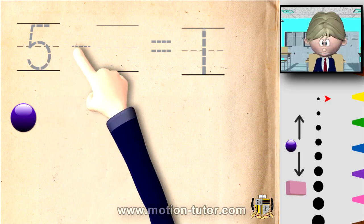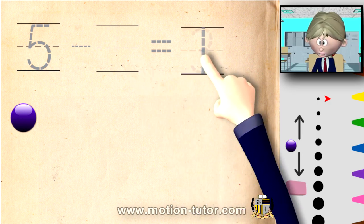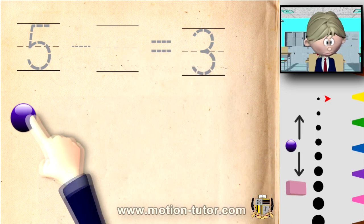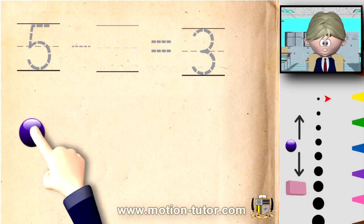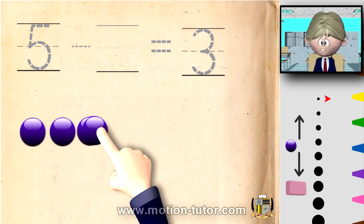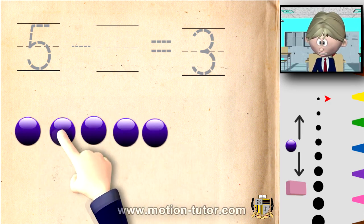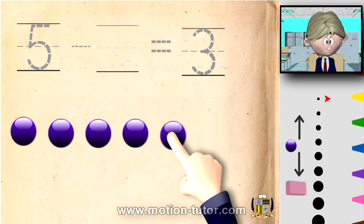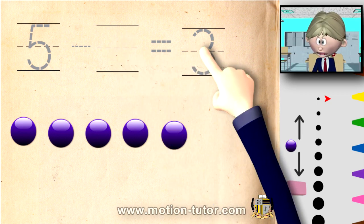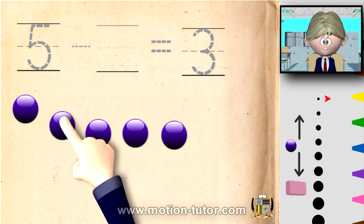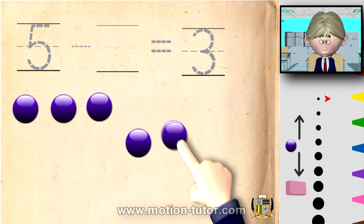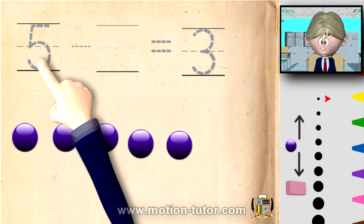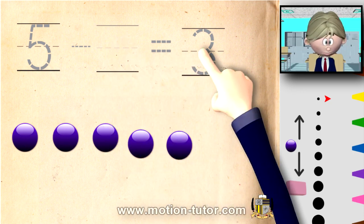This time we're going to do five take away some number, and that's going to equal three. Five marbles take away some — we don't know how many yet — but we're going to have three left over. We start with five: one, two, three, four, five. We want one, two, three left, so we have to take the others away from the five so we can have these three left over.